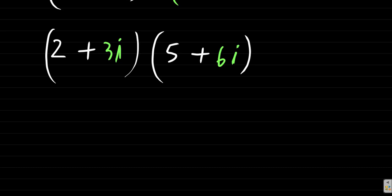So what we have here: this is equal to two times five is going to be 10, plus two times six i is going to be 12i, plus three i times five, three fives is 15, so there are 15i. And then after that, you have three i times six i. This gives you 18i squared.